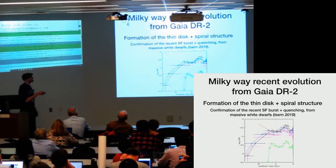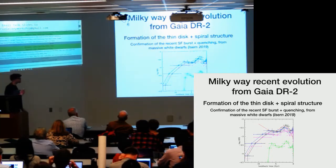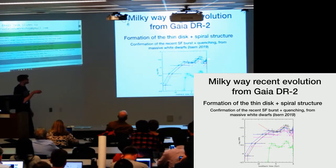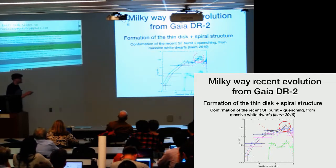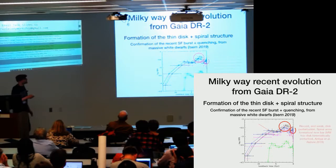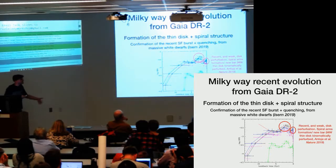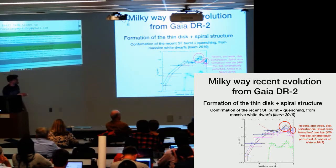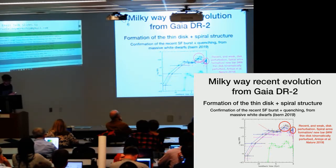A very recent work by Isern in 2019, using a very different approach with massive white dwarfs, found again this recent peak in star formation, but also found a very recent peak at almost the present day. We suspect this earlier peak is the one we already found, and the more recent one is the origin of the new bar — the secular bar of the Milky Way. The current-day spiral arms are probably generated by this new event, also related to the very kinematically perturbed disk published in Antoja et al. in Nature this year.